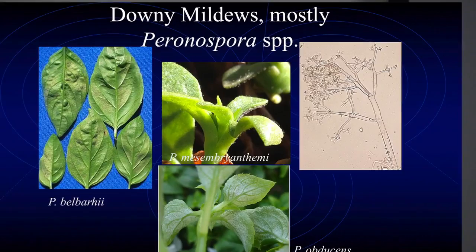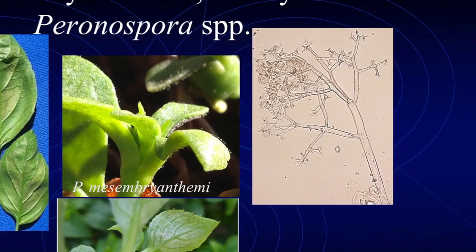I always think of downy mildews as my Christmas organism because it tends to show up in the cool part of the year - we seem to get a new one every year around Christmas time. They grow on sporangia, the spore-bearing structure, and it often looks like reindeer horns. The spores are circular, so you've got the balls hanging off the reindeer horns. That's why I think of it as my Christmas one.